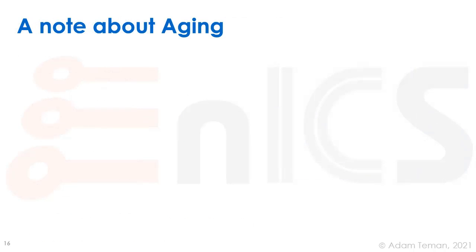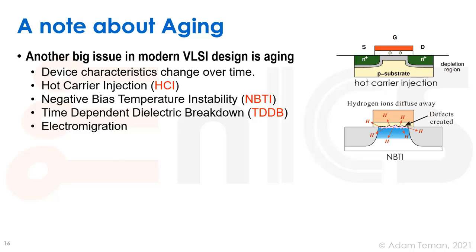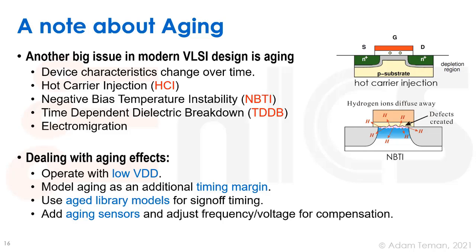Another factor affecting timing is aging. In modern VLSI design, reliability over time is a big deal — device characteristics change over time. Effects include hot carrier injection, which changes transistor Vt; negative bias temperature instability (NBTI); time-dependent dielectric breakdown; and electromigration. One methodology approach is using a lower VDD, since smaller fields cause less aging, but that's often not sufficient because the nominal VDD may be too high to fully mitigate aging effects.